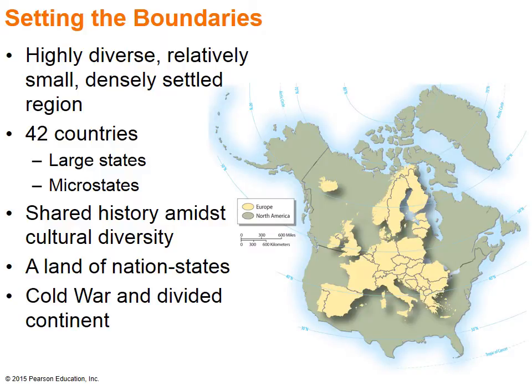Europe is the most diverse region in the world. It's relatively small in area — smaller than North America — and densely settled, with more than half a billion people. As you can see from the map, the size of Europe fits inside that of North America. Much of Europe lies at the same latitude as Canada. There are 42 countries, from large states such as Germany, Spain, and France, to microstates such as Andorra and Monaco. Each country has its own culture and language, bounded together by its shared history.